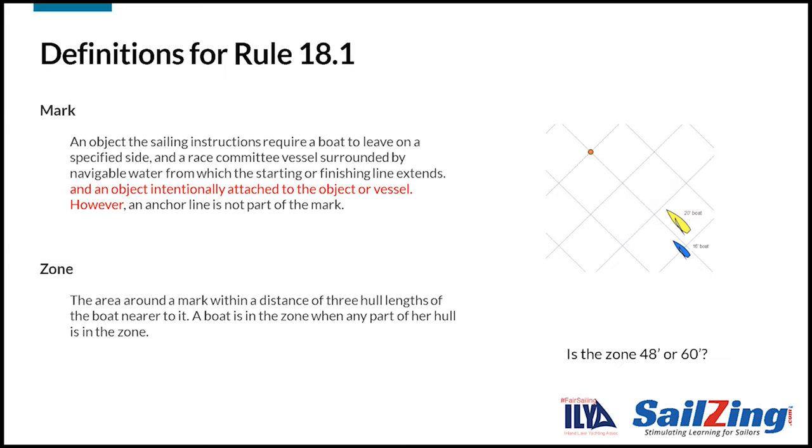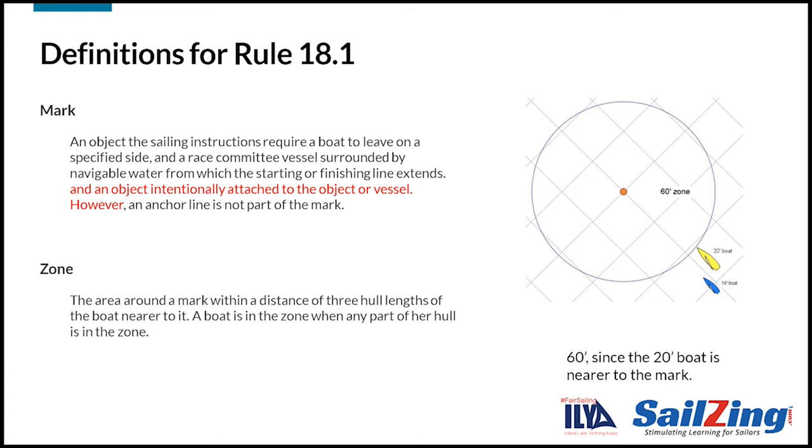Here's a question. A 20-foot boat leads a 16-foot boat into the mark. How far from the mark does the zone begin? The answer is 60 feet. The 20-foot boat is nearest the mark, so she defines the zone, which is three times her hull length, or 60 feet. If the 16-foot boat had led into the mark, the zone would be 48 feet.